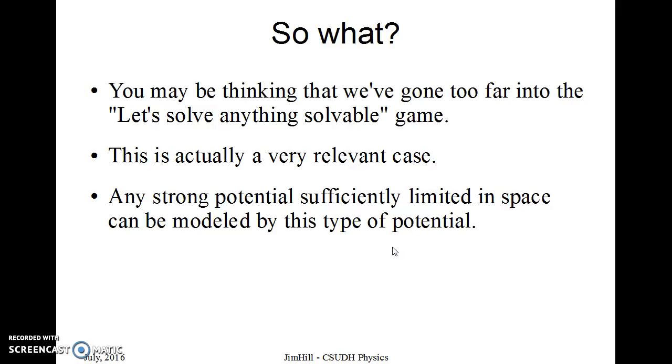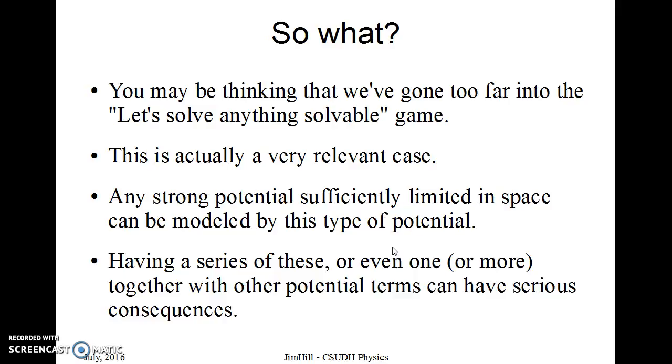If we had a whole set of atoms, we might think of it as a set of delta functions added up. That's one thing that we could think of. If we had such a set, or in fact, if we had one or more delta functions together with other potential terms, we'd have very serious consequences for scattering states. It will change reflection coefficients, transmission coefficients, it will change scattering angles in 3D. So there's a lot we're going to be able to study about this.